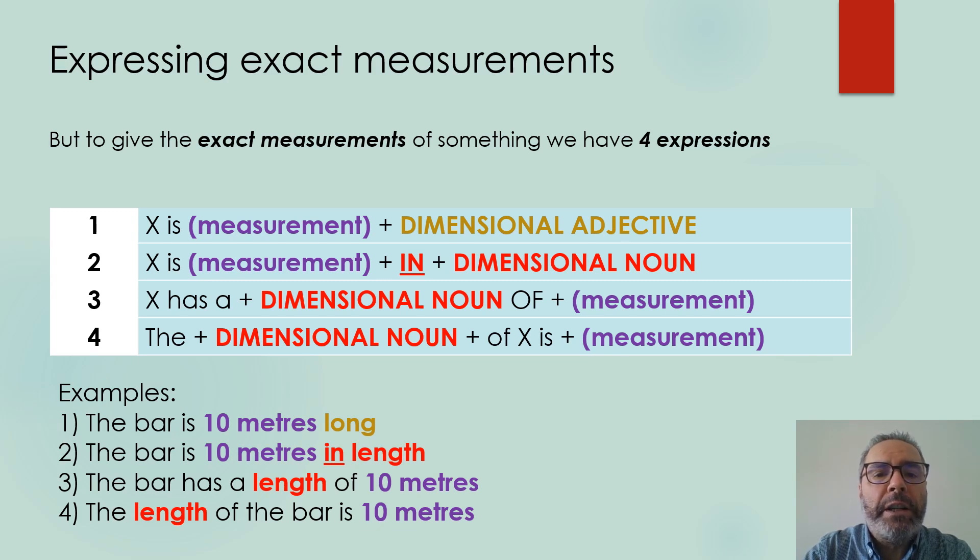The second structure is basically the same, but with the dimensional noun. In this case, we must add the preposition in before the dimensional noun. Example 2. The bar is 10 meters in length.